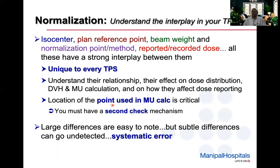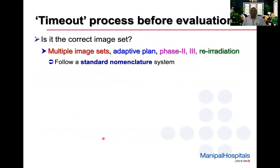I recommend taking a timeout process before starting plan evaluation — ask questions like: is this the correct image set used in the plan? This is particularly important when there are multiple image sets for a patient, or when adaptive planning, phase two, phase three, or re-irradiation is involved. When a patient comes after a couple of months or years for re-irradiation, you have to use standard nomenclature to avoid mistakes.